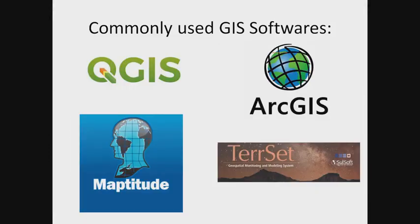Commonly used GIS software includes QGIS, ArcGIS, Maptitude, TerSet, and MacGIS. There are many others, but these are some of the most commonly used and well-known GIS software tools in the industry.